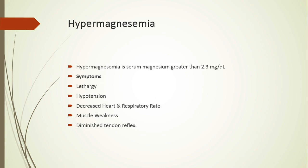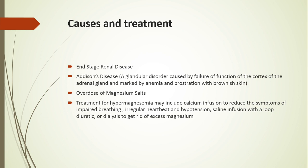Hypermagnesemia is when there is a high amount of magnesium in the serum. Symptoms include lethargy, hypotension, decreased heart and respiratory rates, muscle weakness, and diminished reflexes. Causes include renal disease, Addison's disease, and overdose of magnesium salts. Treatment: first line of defense is calcium infusion to reduce symptoms of impaired breathing, irregular heartbeat, and hypotension; followed by saline infusion with diuretics or dialysis to remove excess magnesium.